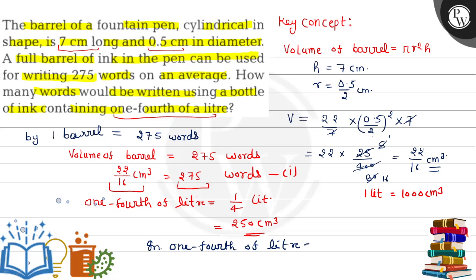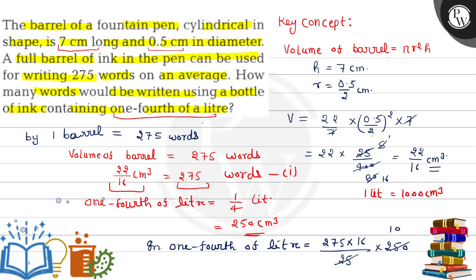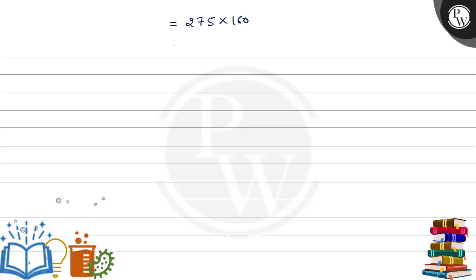One fourth of liter equals 250 into 22 upon 16, which we divide. First 16 upon 22 multiply by 250. If we multiply, 275 into 160 equals 50,000 words. So one fourth of liter means 50,000 words can be written. This is our final answer.